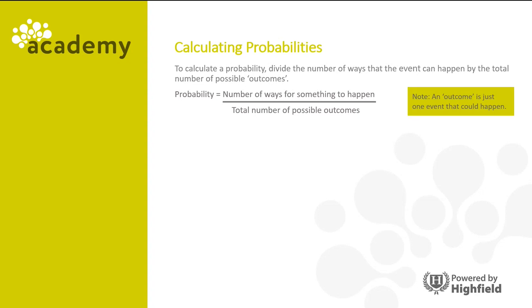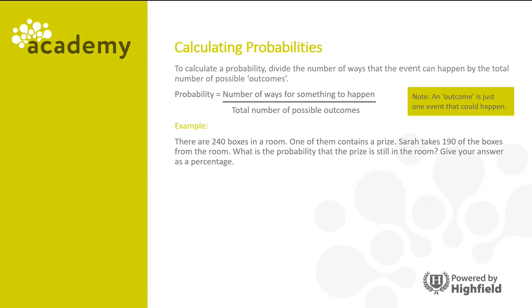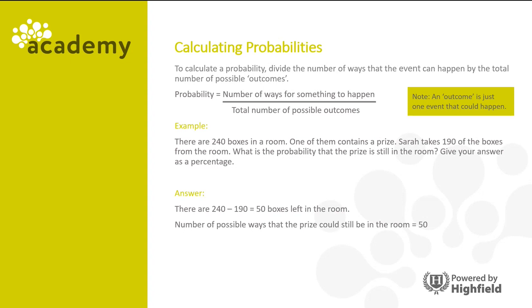It's worth noting that an outcome is just one event that could happen. In this example, there are 240 boxes in a room. One of them contains a prize, and Sarah takes 190 of the boxes from the room. What is the probability that the prize is still in the room? Give your answer as a percentage. Well, there are 240 boxes in the room, and if we subtract the 190 boxes that Sarah takes, that leaves us 50 boxes left in the room. The number of possible ways that the prize could still be in the room is 50, and the total number of possible outcomes is 240. So the probability is 50/240, and if we simplify that, it's 5/24. As a percentage, that's 50 divided by 240 times 100, which is 20.83%.